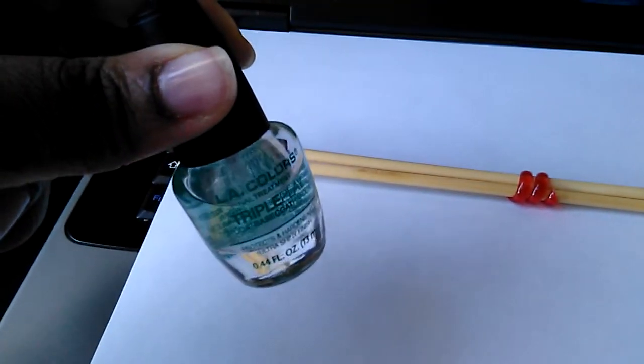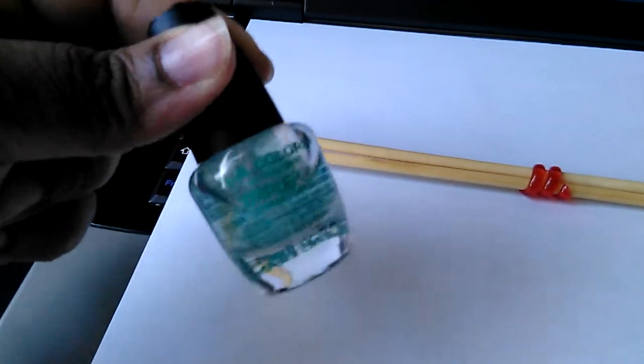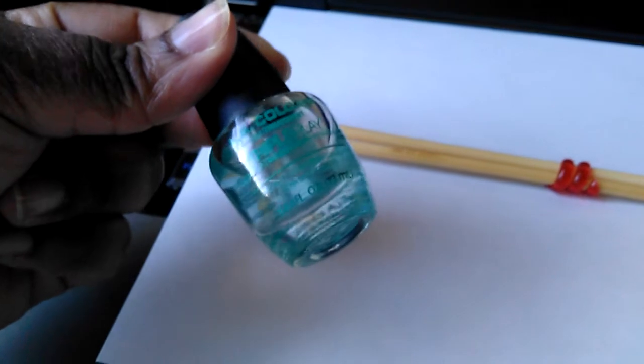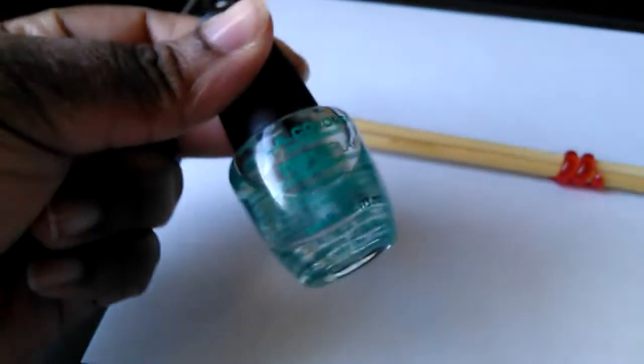This particular one is from LA Colors because that's what was at my store. It's a triple ply, so it's the base coat, top coat, and nail hardener all in one. I basically just got a clear coat. It can be anything as long as it's clear.